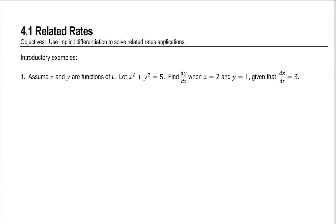We are going to start section 4.1 today. We're going to look at some implicit differentiation problems, but this time, instead of always treating y like a function of x and differentiating with respect to x, we are going to treat x and y as functions of a different variable — as functions of t. This was mentioned in the last chapter, and we're going to look at the mechanics of a problem like this, leading into the full application problems we'll be focusing on.